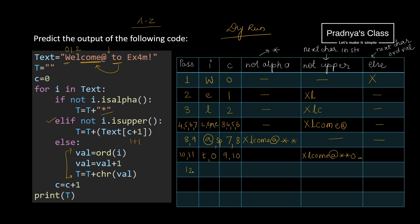After O there is a space; for space we already know what to do — we concatenate star. The previous string is X, L, C, O, M, E, @, *, *, O, then space — and after space we concatenate star. C becomes 11. In the 13th pass we get capital letter E. For capital letters we come to the else part, where we take the next character according to the ordinal value. After E we get F, so F gets concatenated.